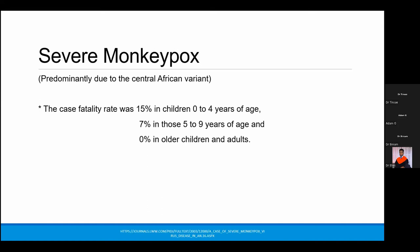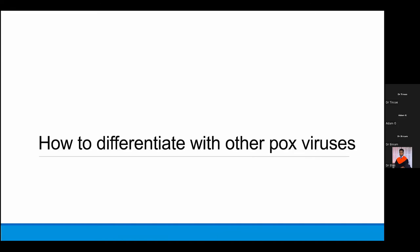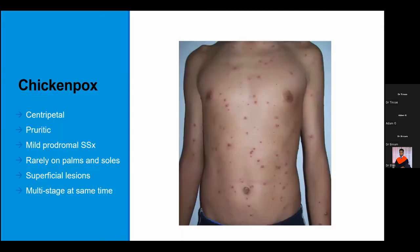When monkeypox causes mortality, it is predominantly due to the Central African variant. One study cited that the case fatality rate was higher in children, young children, and infants compared to adults. The key question is: how do you differentiate monkeypox from other pox viruses, and what are its differential diagnoses?